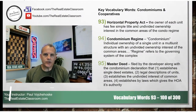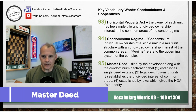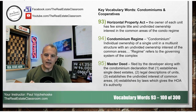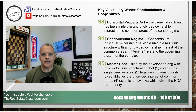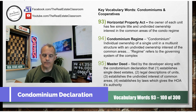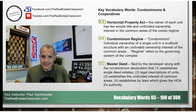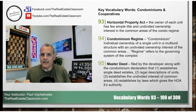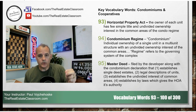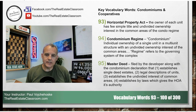Number 95: master deed. A master deed is filed by a developer building a condominium regime, and along with it is what's called a condominium declaration. The master deed and declaration do several things. Number one, they establish the ability for single deed estates. Remember, individual units are owned fee simple, so there must be an individual deed — this establishes a mechanism for single deed estates.